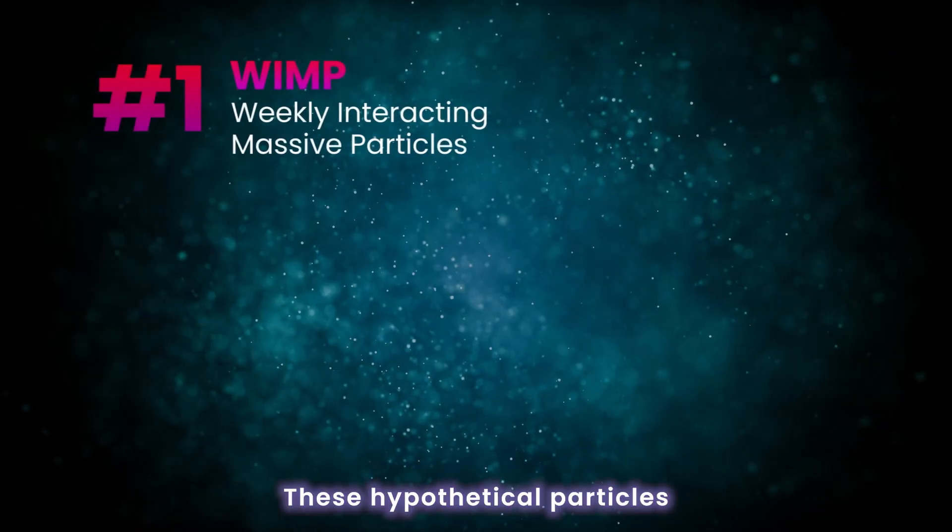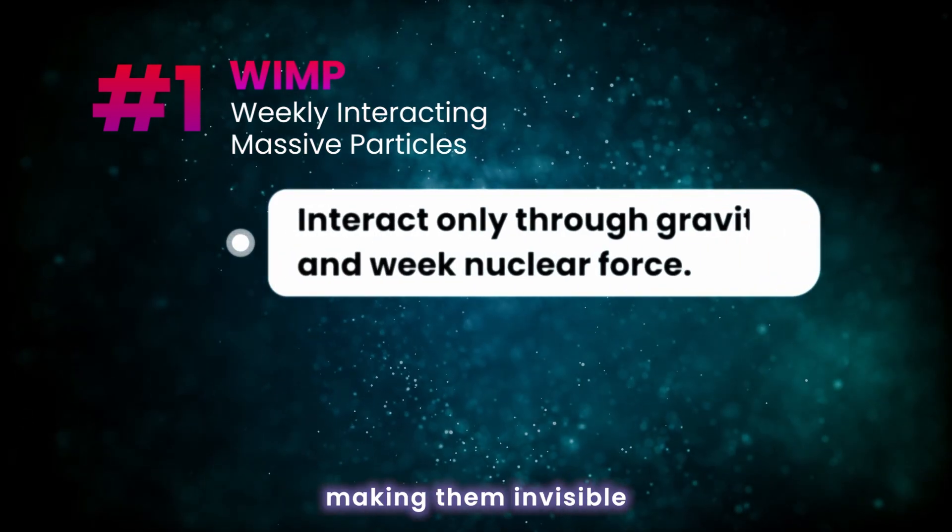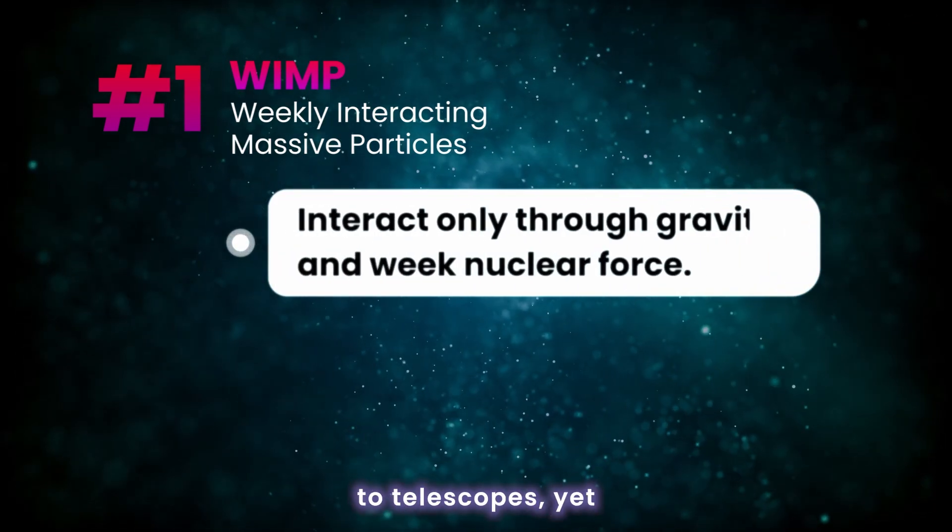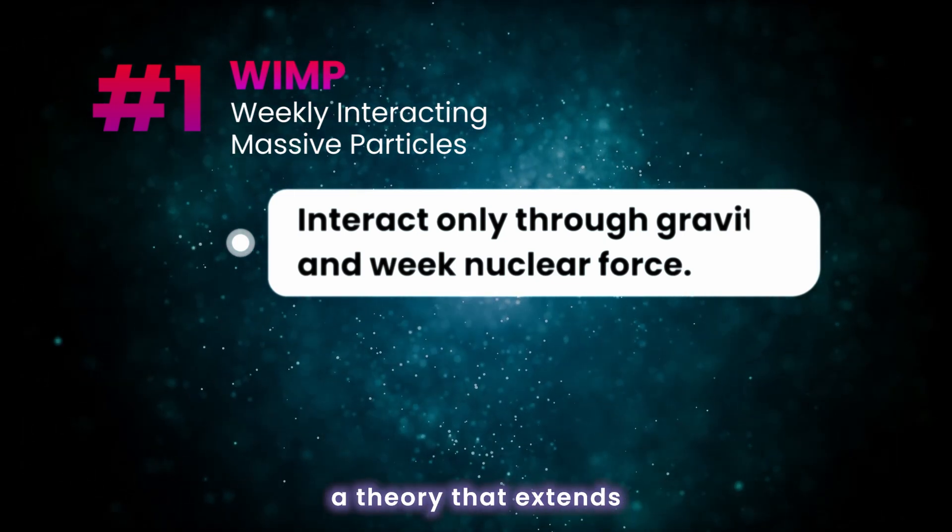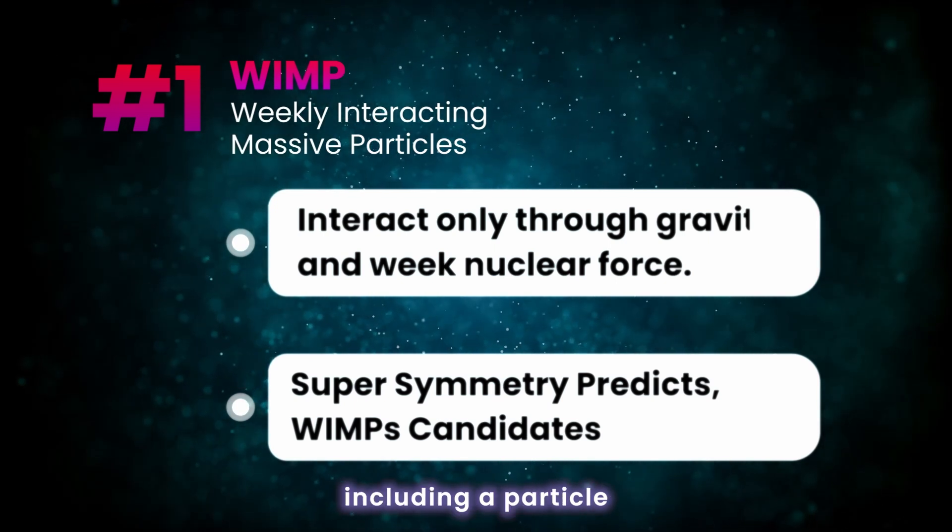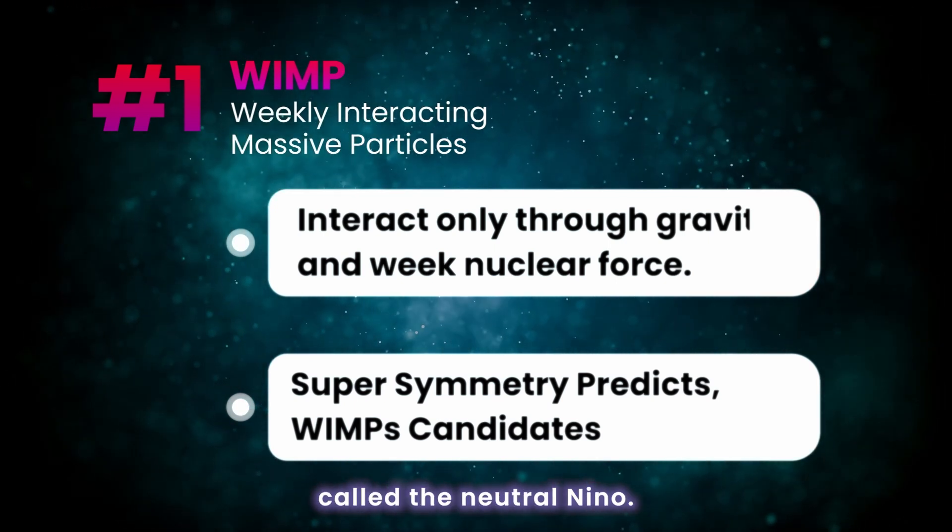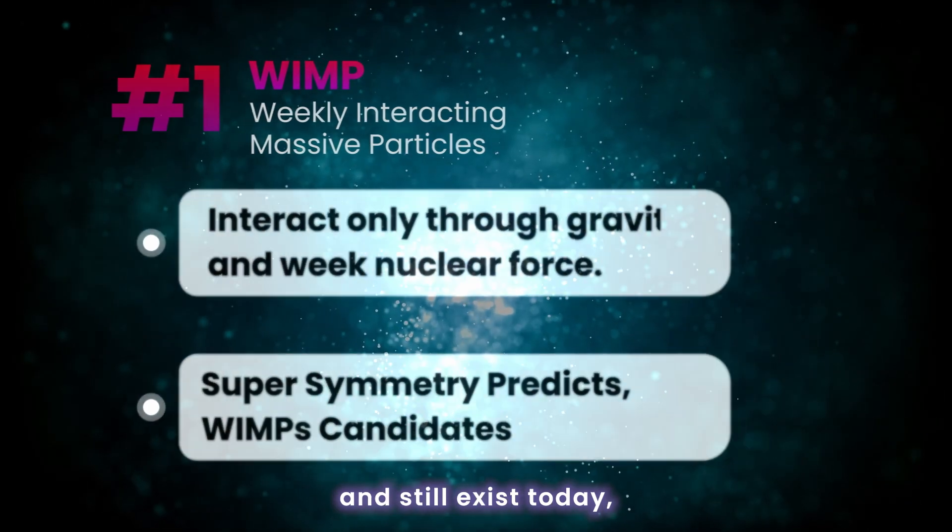These hypothetical particles would interact only through gravity and the weak nuclear force, making them invisible to telescopes, yet still able to influence galaxy dynamics. Some versions of supersymmetry, a theory that extends the standard model, predict WIMP candidates, including a particle called the neutralino. If stable, neutralinos could have formed in the early universe and still exist today.